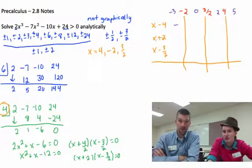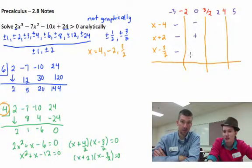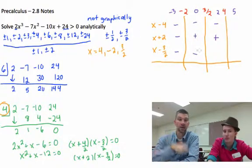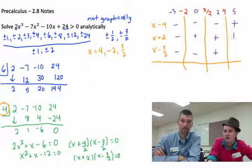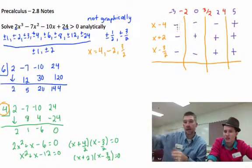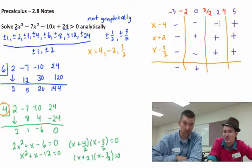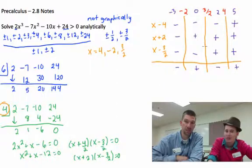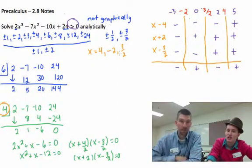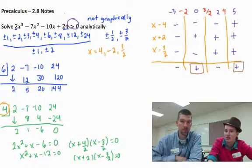If I plug in negative 3: that's negative, negative, negative - overall negative. Then 0: negative times positive times negative - positive. Then 2: negative, positive, and 2 minus 1.5 is positive - negative. Then 5: positive, positive, positive - positive. What it asks us for is greater than 0, which means we're looking for the strictly positive entries.